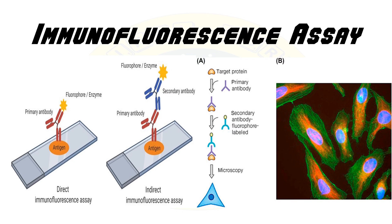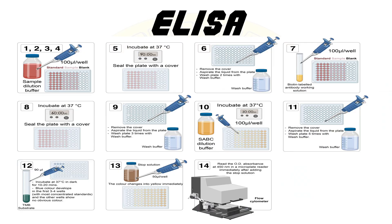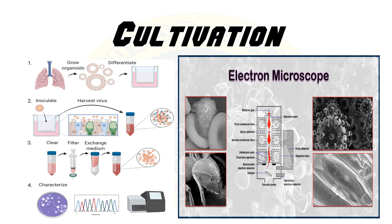Another diagnostic method is the immunofluorescence assay. This technique involves staining respiratory epithelial cells with fluorescently labeled antibodies that specifically bind to HMPV antigens. Under a fluorescence microscope, infected cells exhibit characteristic fluorescence indicating the presence of the virus. Enzyme-linked immunosorbent assays, or ELISAs, are also employed in HMPV diagnosis, detecting viral antigens in respiratory specimens or specific antibodies in serum samples. ELISAs are useful for both acute infection diagnosis and sero-epidemiological studies.